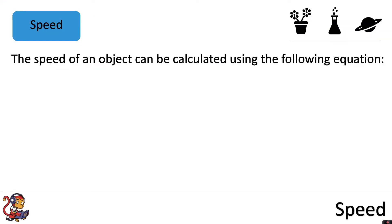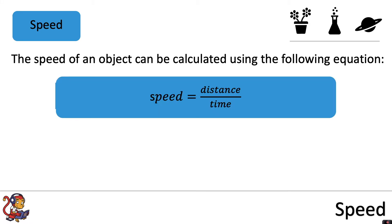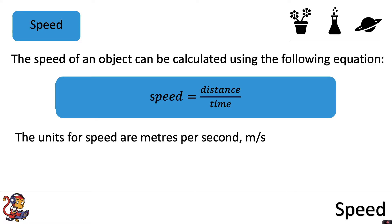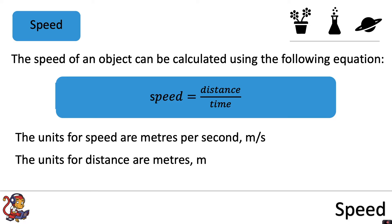The speed of an object can be calculated using the following equation: speed equals distance divided by time. The units for speed are meters per second, or m/s. Units for distance are meters, m, and the units for time are seconds, s.